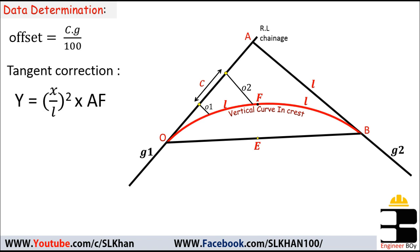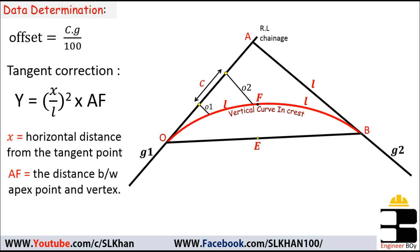The formula for tangent correction is y equals x divided by L squared, times AF, where x is the horizontal distance from the tangent point or interval distance, L is the length of the vertical curve, and AF is the distance between the apex point and vertex.